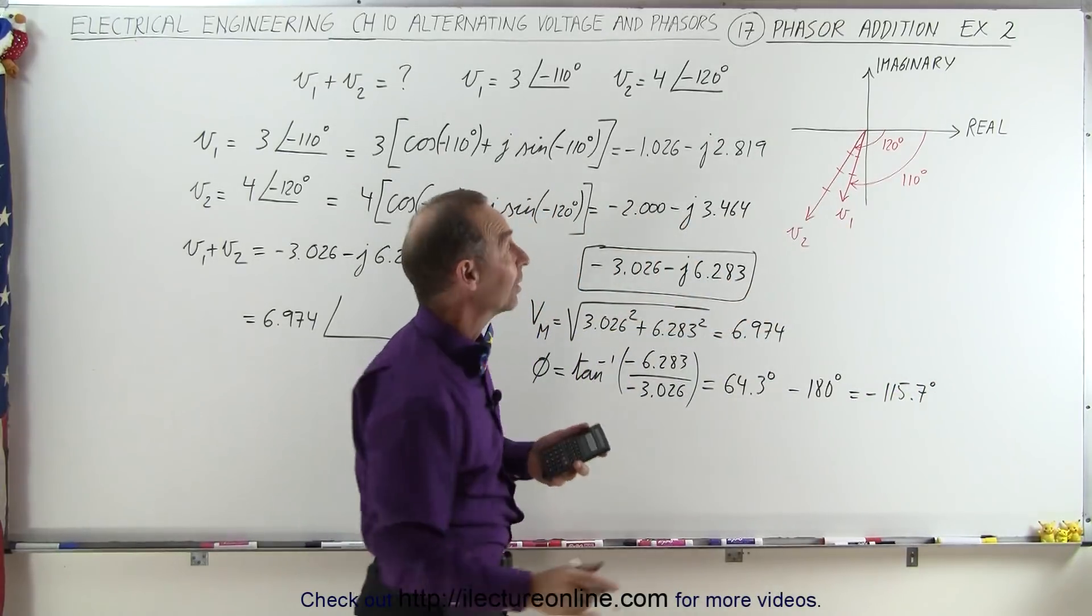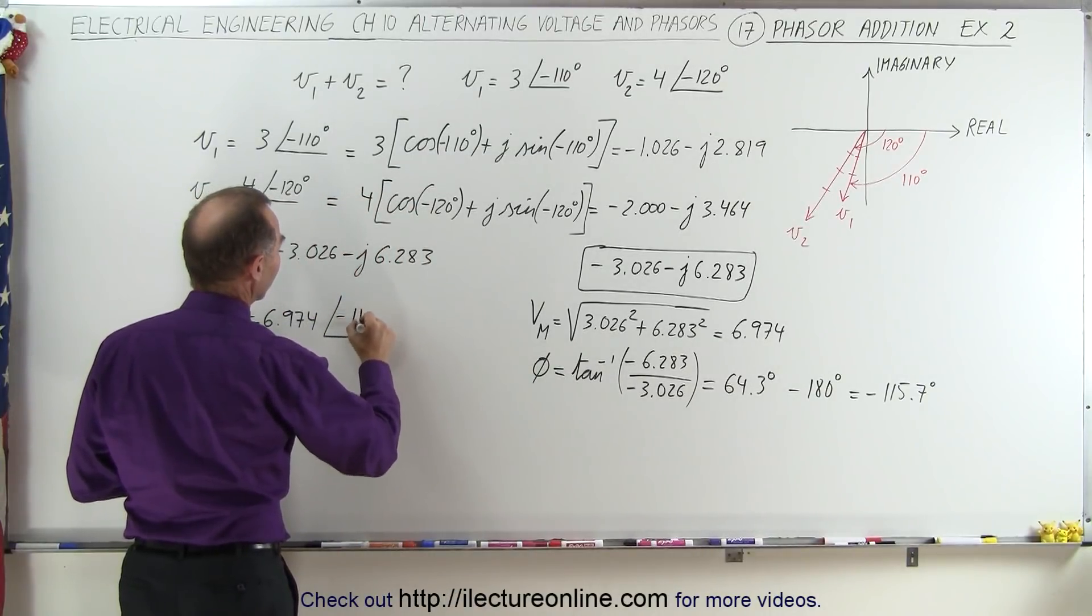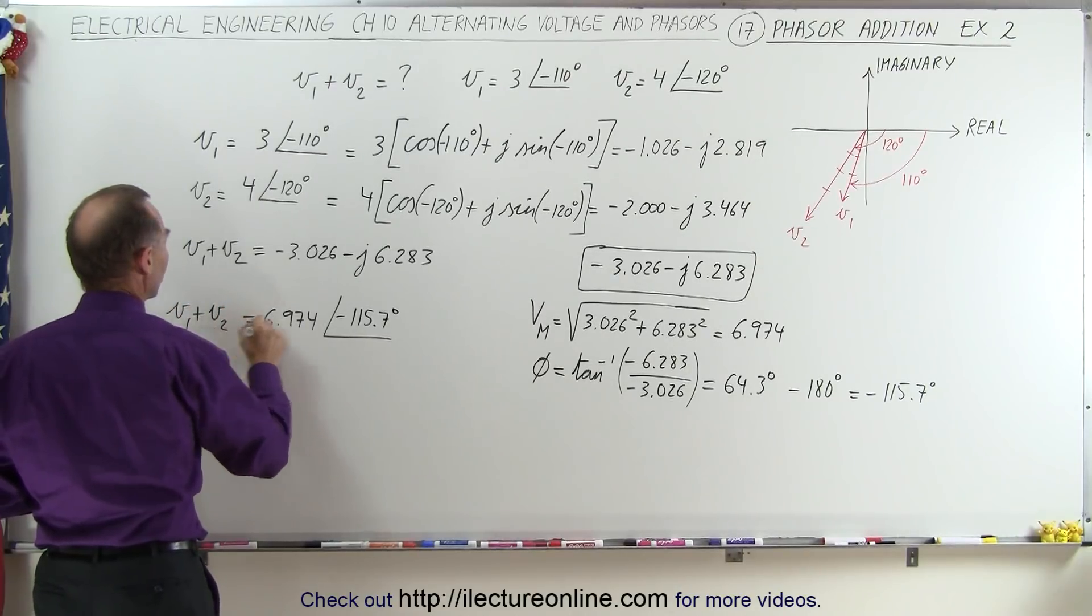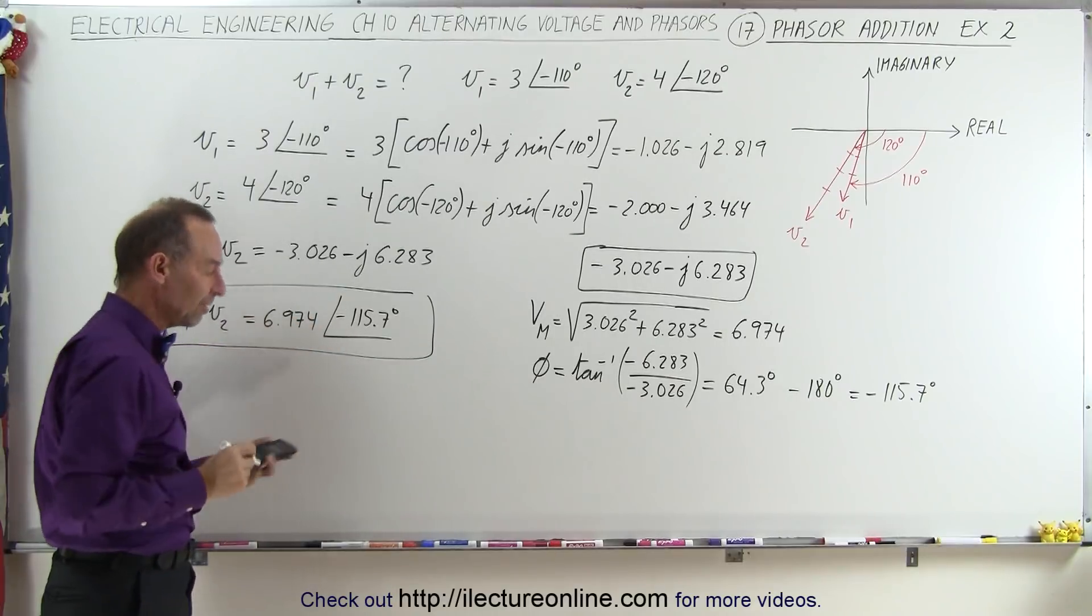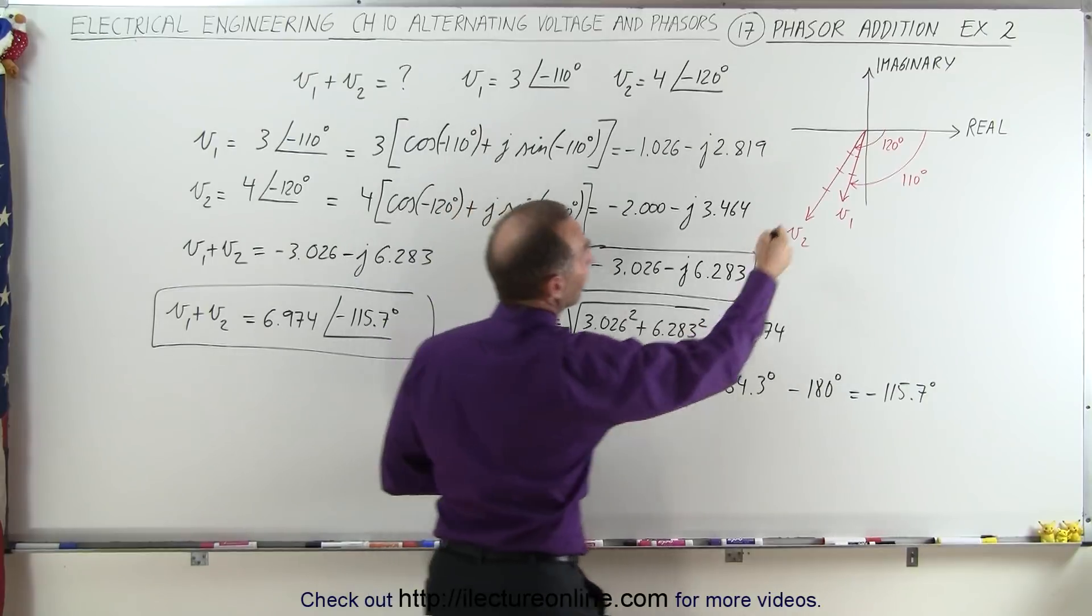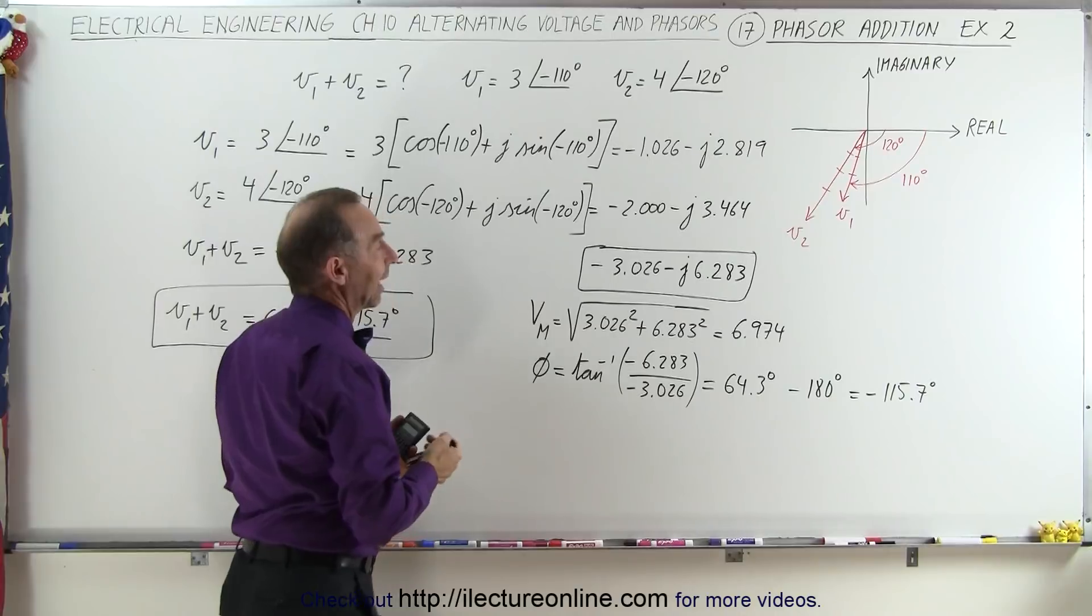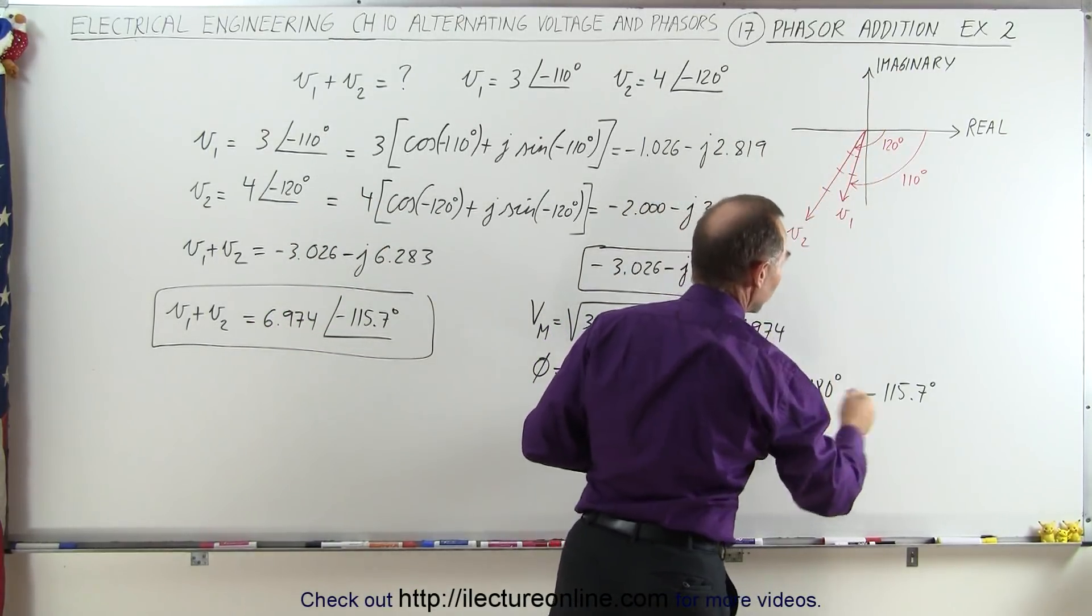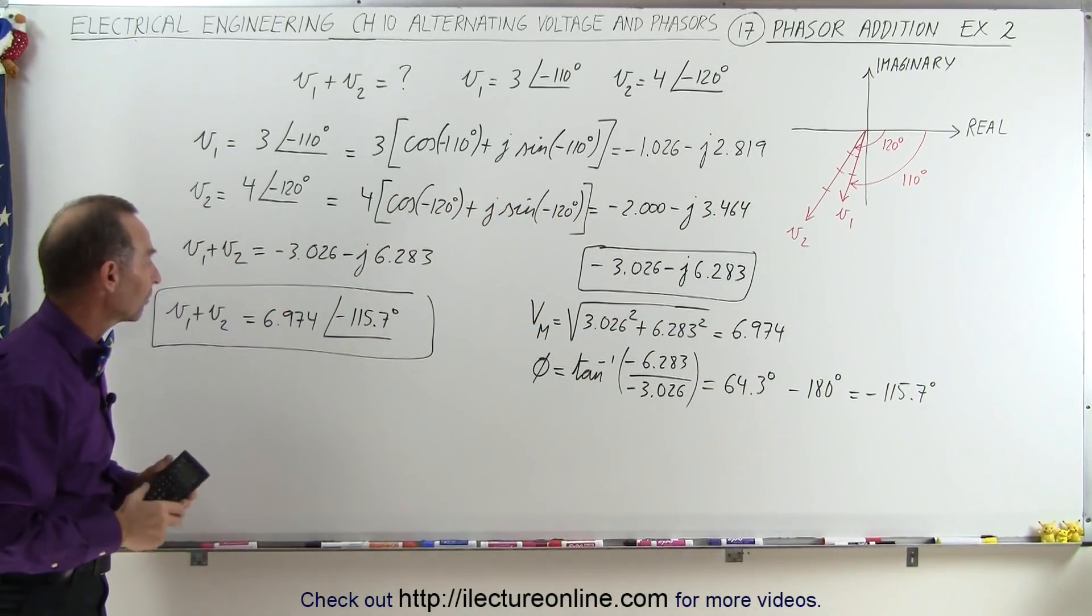So the angle is minus 115.7 degrees, and that would be the sum of the two voltages. And that's then in terms of the magnitude and the phase angle. And again, how did I know to subtract 180 degrees? Because I knew that the angle had to be somewhere in this direction. And since we're both negative, I know that the result will be either in that quadrant or in this quadrant. Since I know it has to be in the third quadrant, I just have to shift it by 180 degrees to get the correct final result.